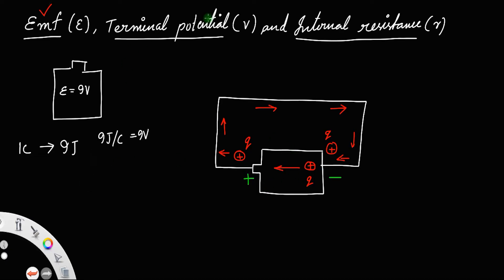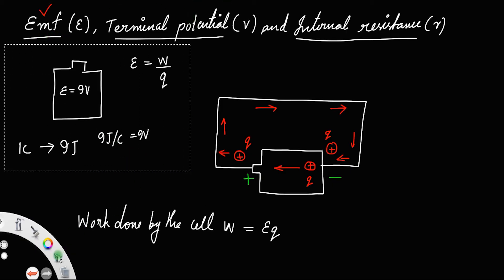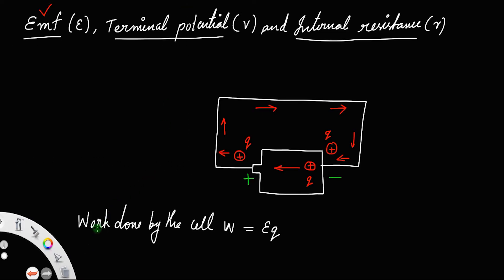The work done by the cell, let us say W, is equal to EMF — the maximum potential the cell can provide — multiplied by charge Q. Because potential equals work divided by charge, work equals potential into charge, so here W equals EMF times Q. A cell can provide a maximum energy of EQ. This is the work done to move a positive charge from the negative side to the positive terminal of the cell.